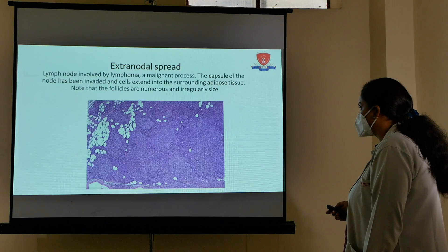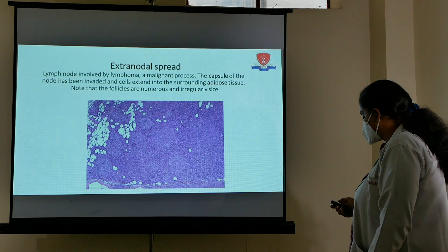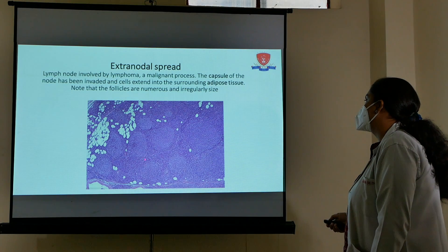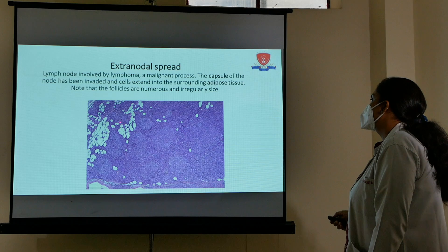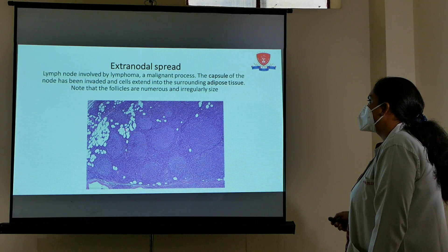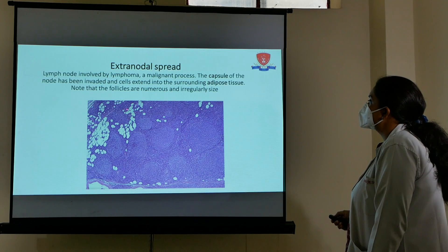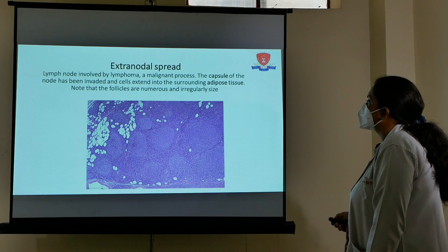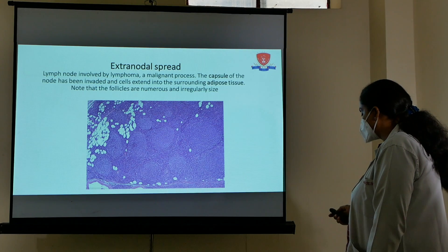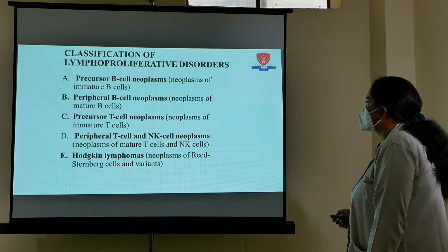Another important feature indicating lymphoma is capsular infiltration — you can see cells infiltrating the fat area in the capsule and extending outside the lymph node. Whenever this massive extranodal spread outside the lymph node is seen, it also denotes a lymphoma.